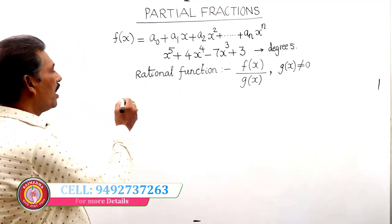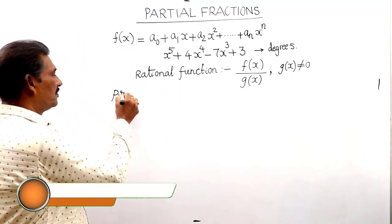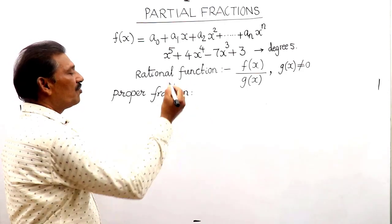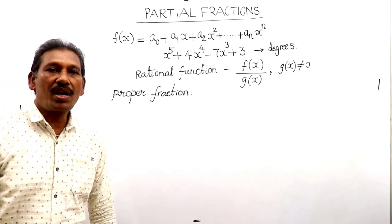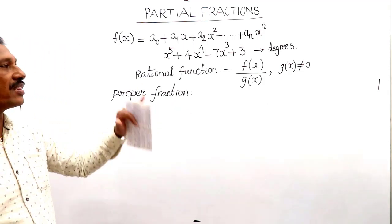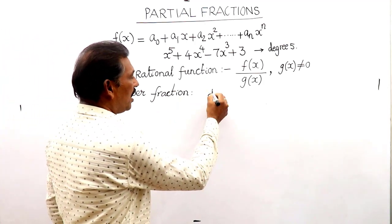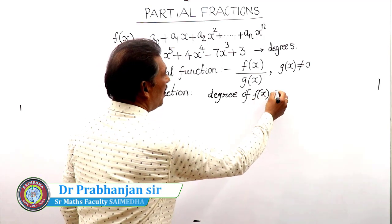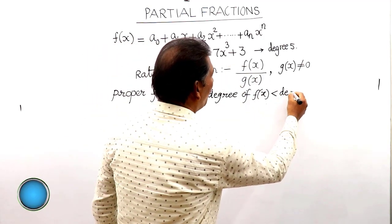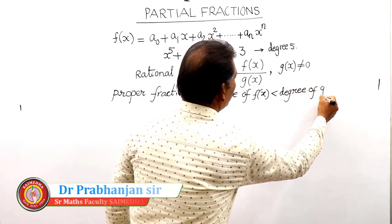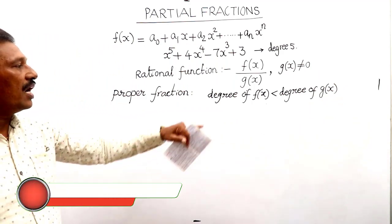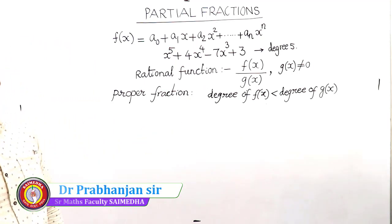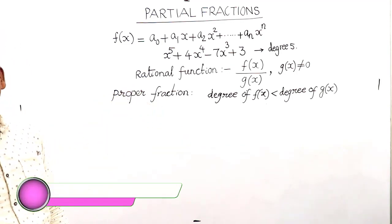In rational functions there are two types. One is called a proper fraction. A proper fraction is one where the degree of the numerator f(x) is less than the degree of the denominator g(x). In other words, the power in the numerator must be less than the power in the denominator.